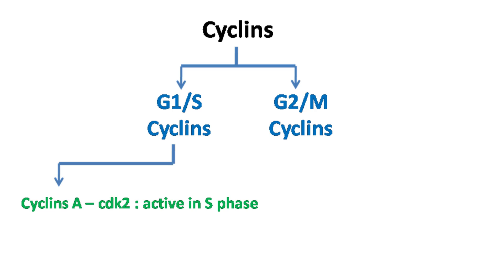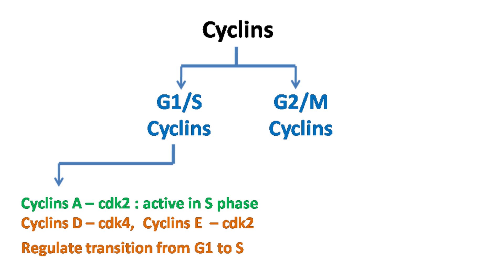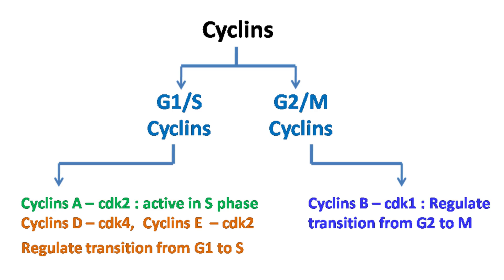G1-S cyclins include the cyclin A and CDK2 complex, which is active in S phase of the cell cycle. Cyclin D and cyclin E regulate the transition from G1 to S phase. G2-M cyclins include the cyclin B and CDK1 complex, which regulates transition from G2 to M phase.